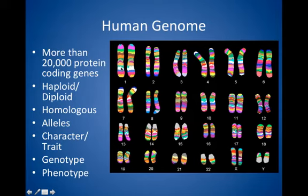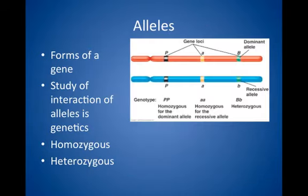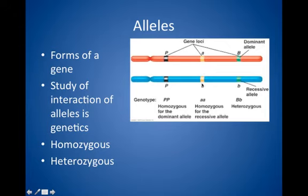Each form of a gene is called an allele. An allele is a form of a gene. If we look at two chromosomes here, these two genes — little a and little a — occur in the same place on the chromosome, but in this example both genes are the same. We call that homozygous: two alleles that are the same. These two big Ps here are also homozygous.